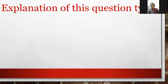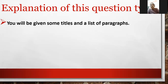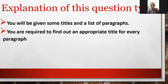Let's start with the explanation of this question type. In the exam you will be given some titles and a list of paragraphs — there could be eight paragraphs, nine, or five; it entirely depends upon the examiner. With that you will be given a list of titles. You are required to find an appropriate title for every paragraph. For example, if you see paragraph A, paragraph B, paragraph C — it's just like you are given a news article and you have to find an appropriate headline for it. You have options and you have to give a title to every paragraph.